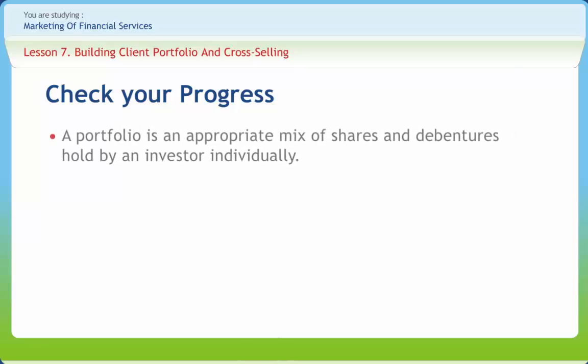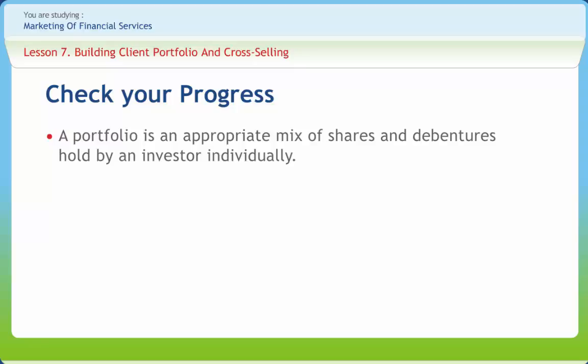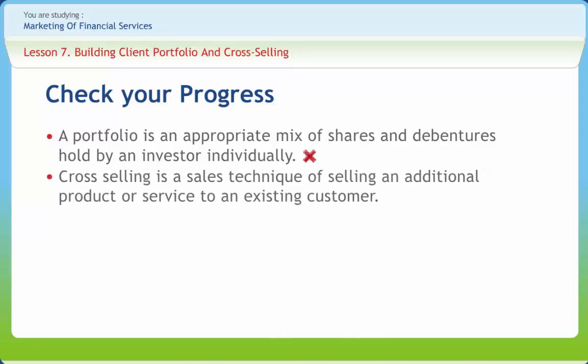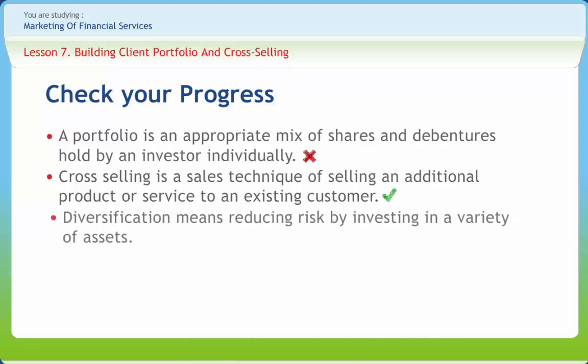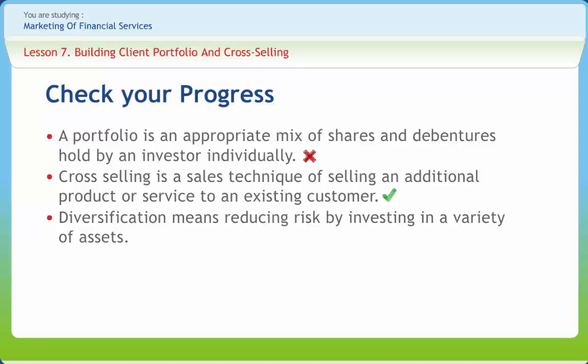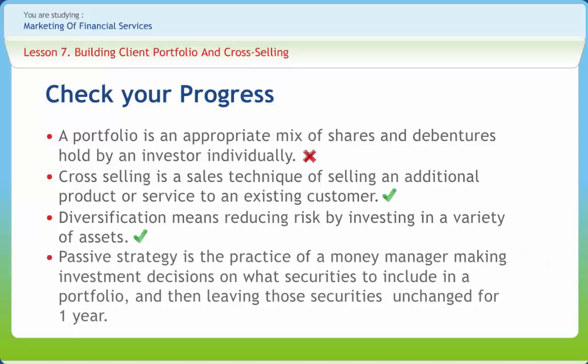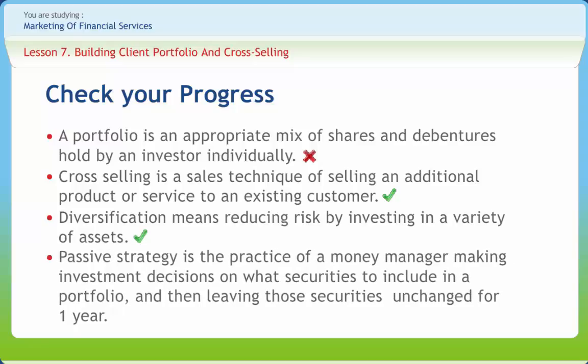Now let us check if we have understood the various concepts discussed in this lesson. A portfolio is an appropriate mix of shares and debentures held by an investor individually — right or wrong? Wrong. Cross selling is a sales technique of selling an additional product or service to an existing customer — right or wrong? Right. Diversification means reducing risk by investing in a variety of assets — right or wrong? Right. Passive strategy is the practice of a money manager making investment decisions on what securities to include in a portfolio and then leaving those securities unchanged for one year — right or wrong? Wrong.